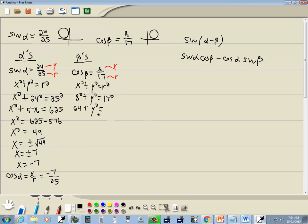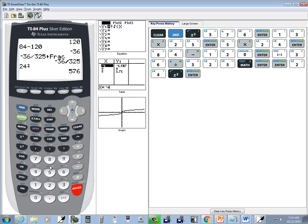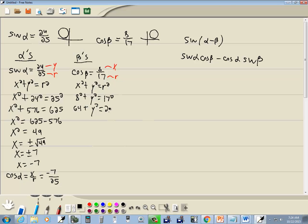Excuse me. So we've got 64 plus y squared is equal to 289. I want to get y by itself. So I take 64 over. So I've got 289 minus 64. 225. Yeah, 225.